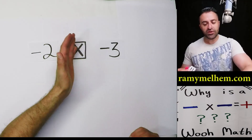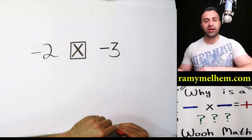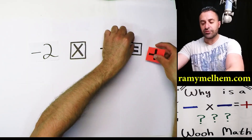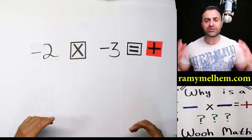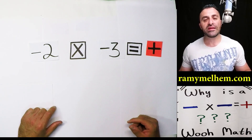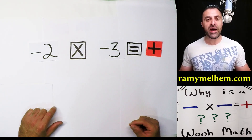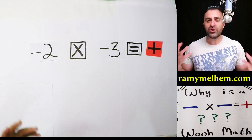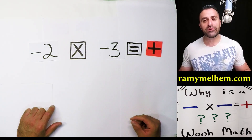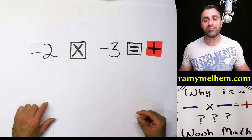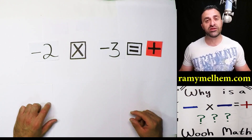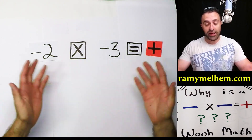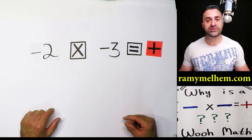Why is it that a negative multiplied by another negative always equals a positive answer? This is one of the most commonly asked questions in math. In a quick YouTube search, I've personally been quite disappointed with the explanations for why this occurs.